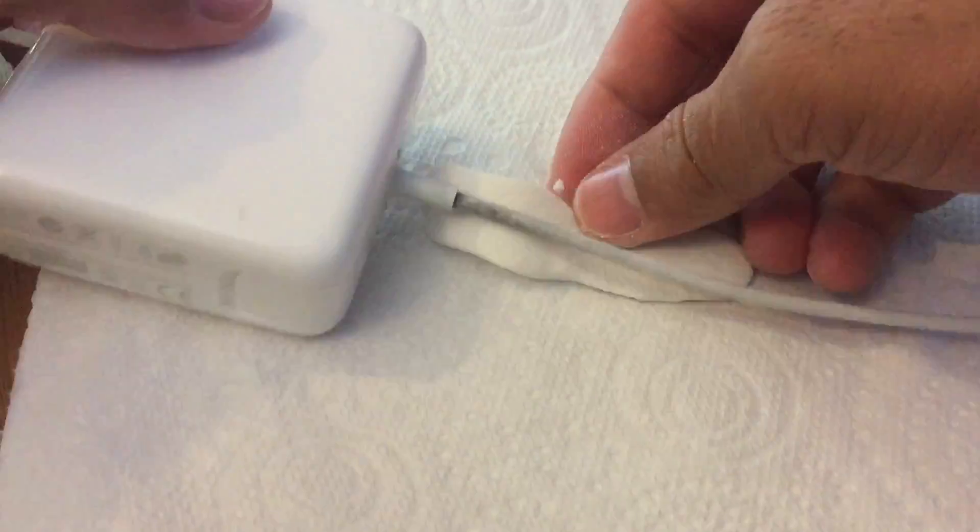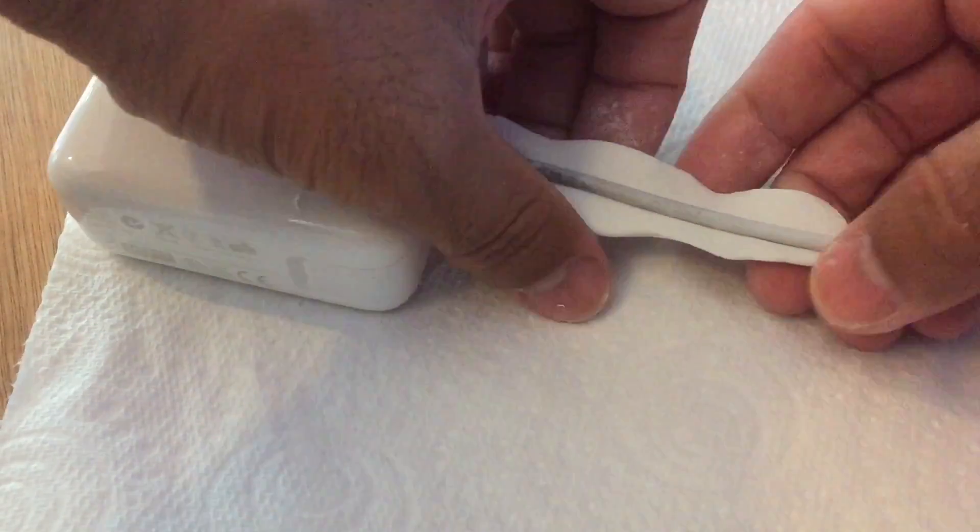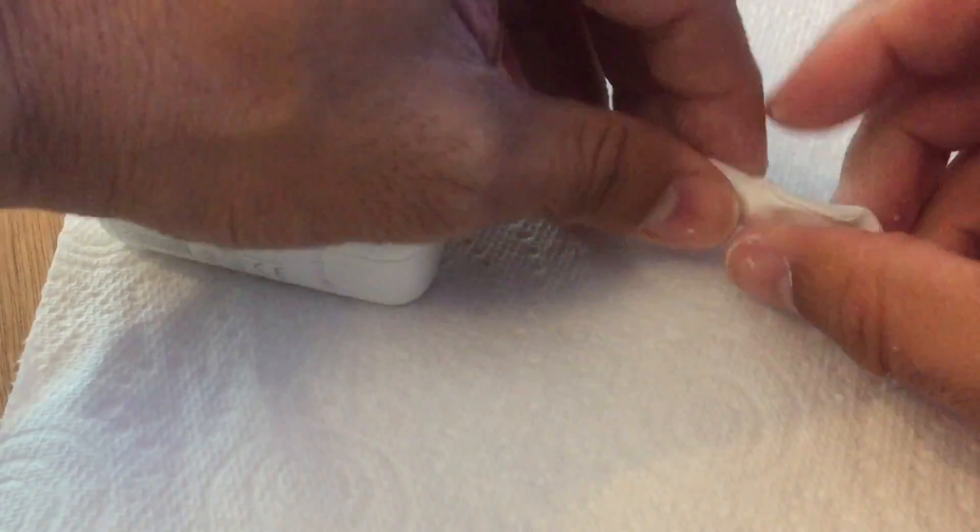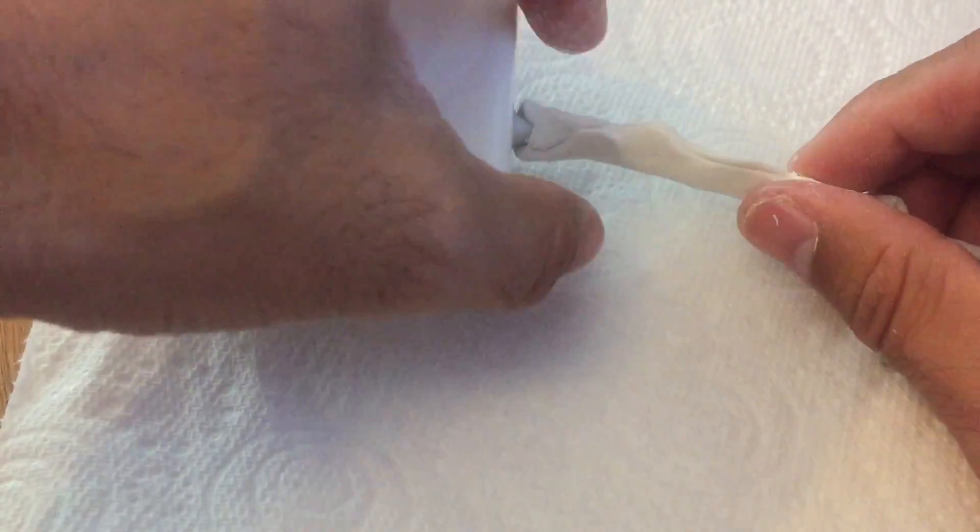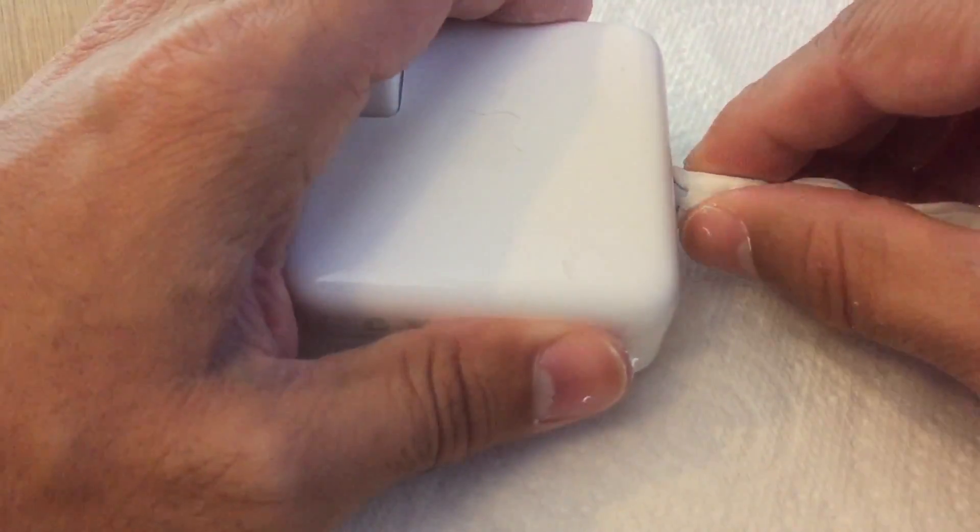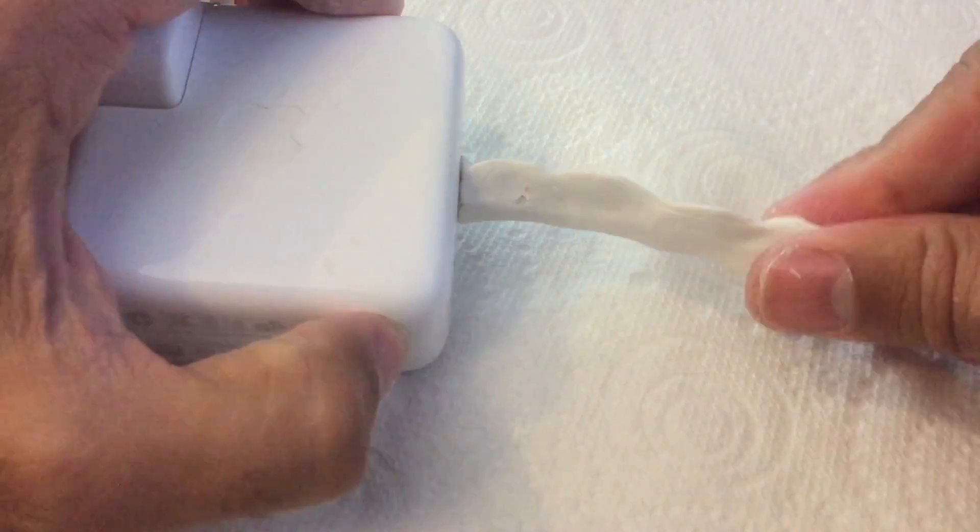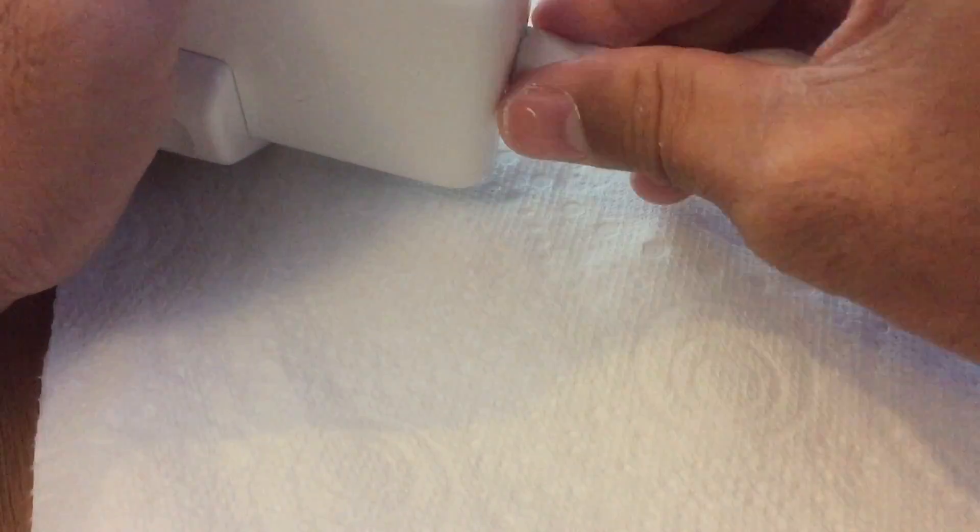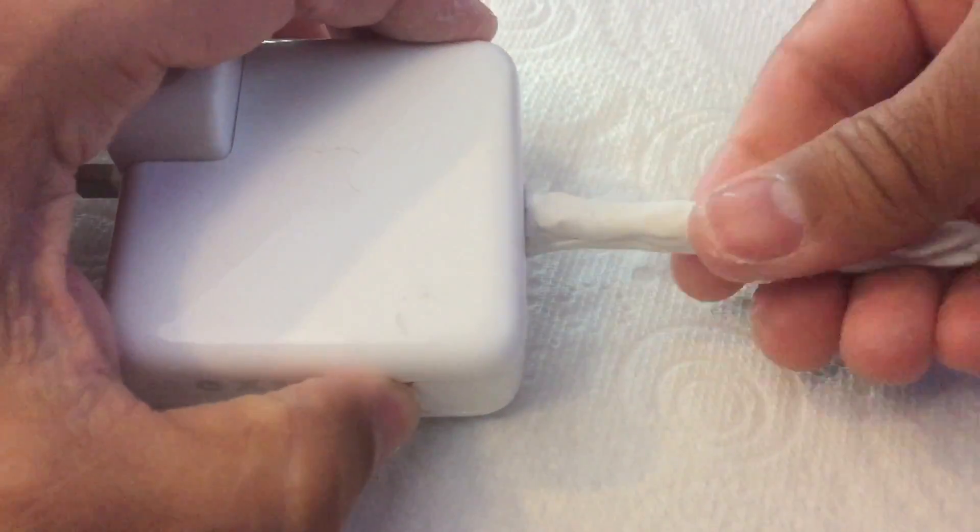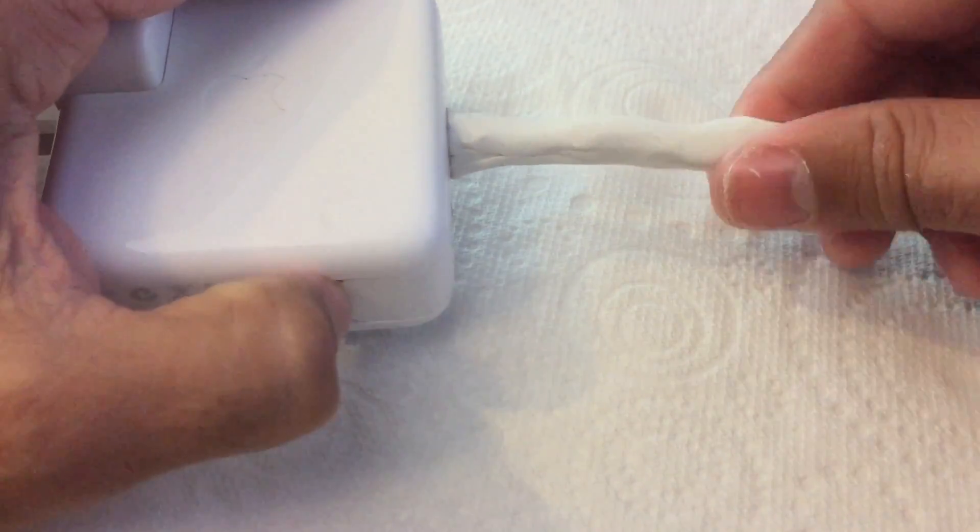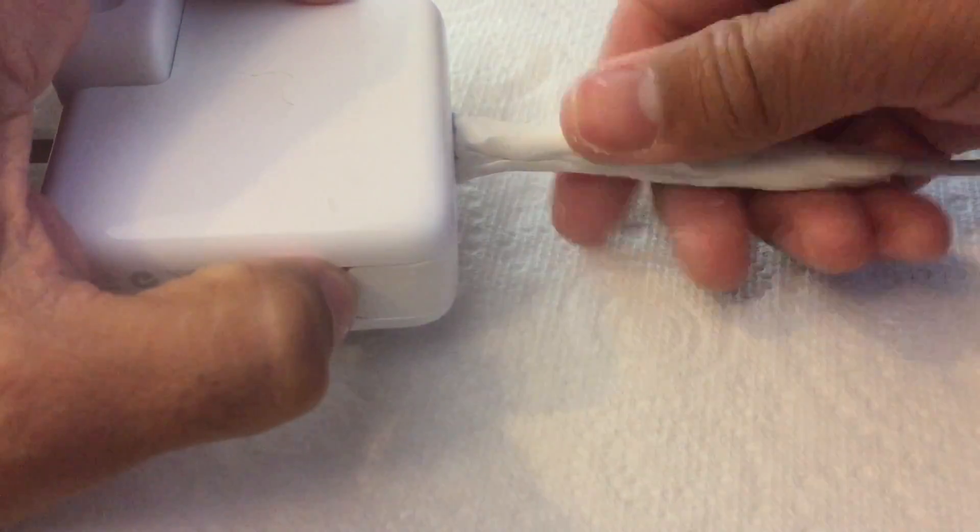Roll it a bit and then flatten that down there. So that's the beginnings of what I want to use. As you can see, that's the bit that I'm hoping to shore up. If I've done this close to correctly, I can mold it around.